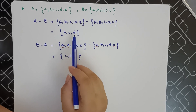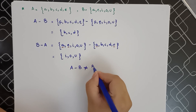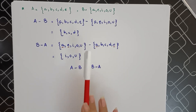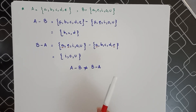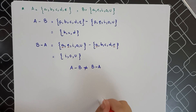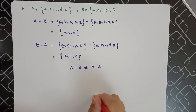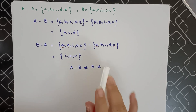So now it should be much clearer that A minus B is not equal to B minus A. This is how the difference of two sets is calculated. I hope you understood today's lecture. If you haven't subscribed to my channel yet, please do so and hit the notification bell so you get notified when I upload my next video. Take care and bye bye!